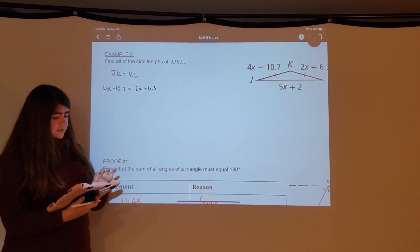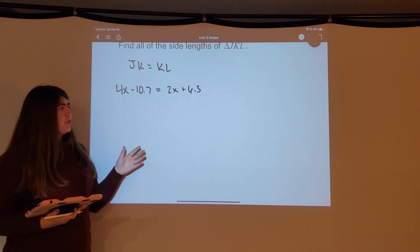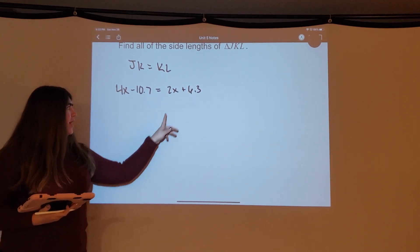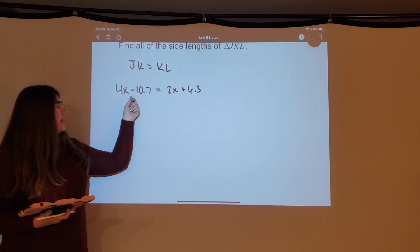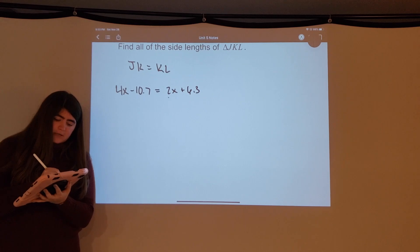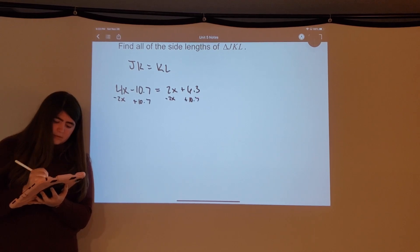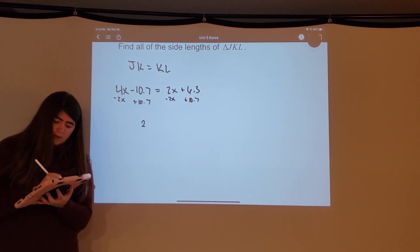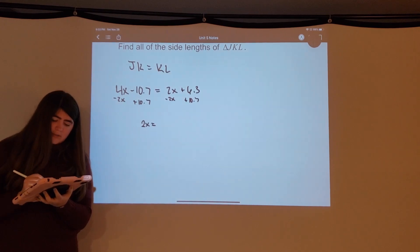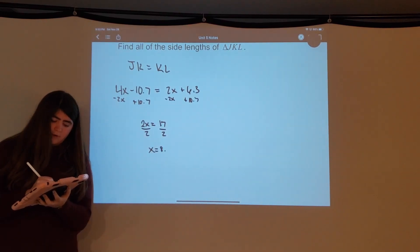Moving some pieces at the same time — to keep things positive, subtract 2x from both sides and add 10.7 to both sides in one step. So 4x minus 2x gives 2x, and 10.7 plus 6.3 gives 17. Dividing both sides by 2 means x is equal to 8.5. That's kind of like a checkpoint.